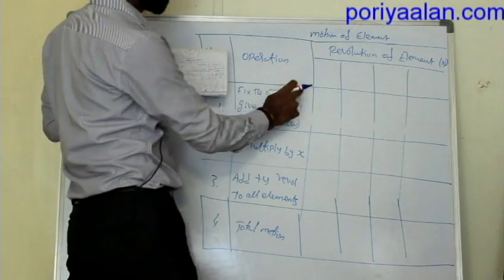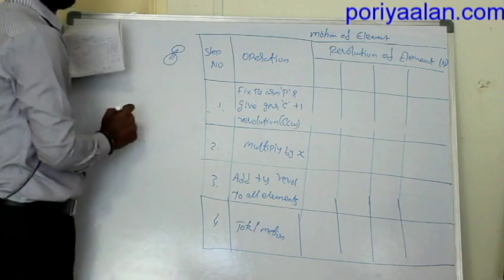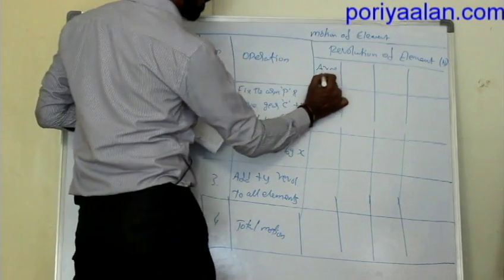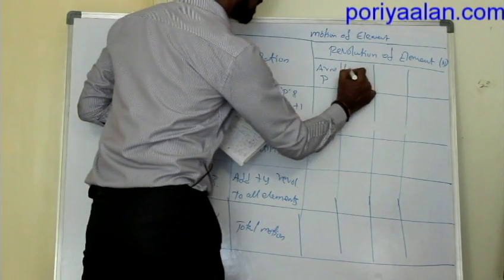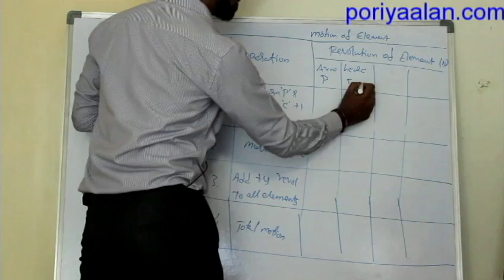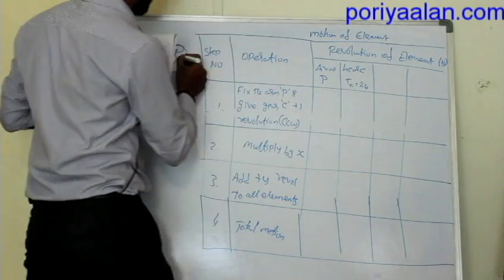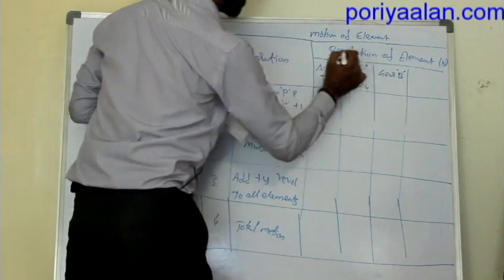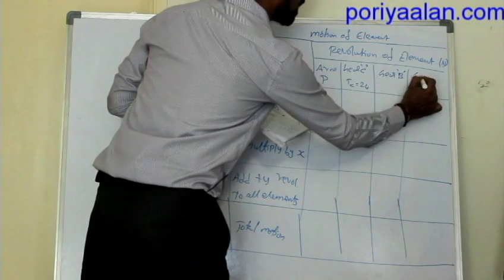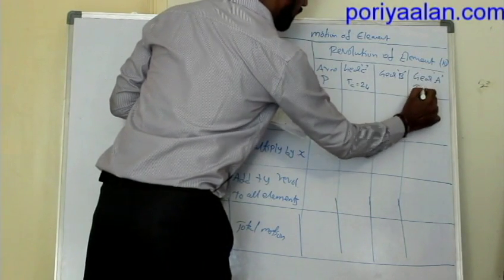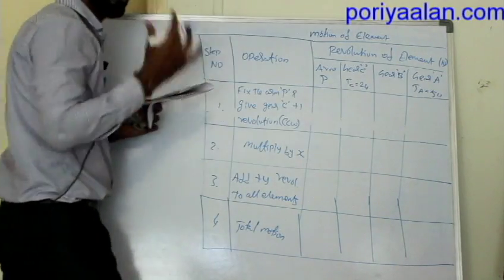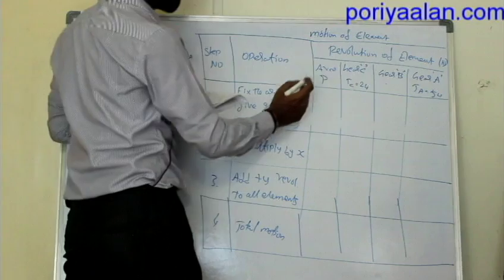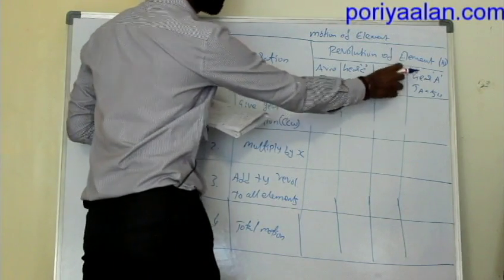The table columns are: arm P, sun gear C (TC = 24 teeth), planet gear B, and annular gear A (TA = 54 teeth). Gear A and gear C are the main gears. Gear B is the intermediate planet gear. TA = 54 is listed as a common gear value in the table.